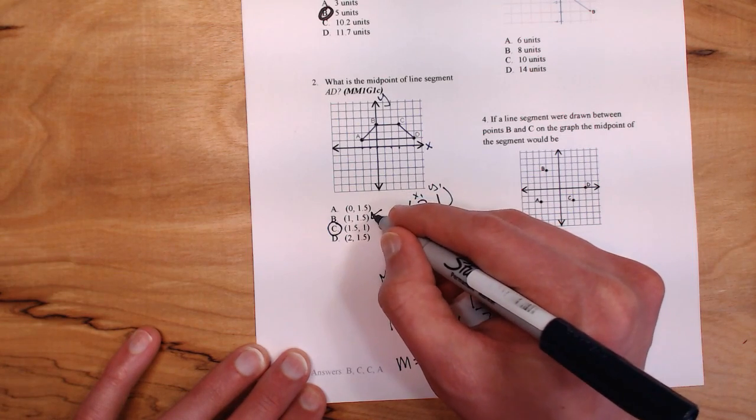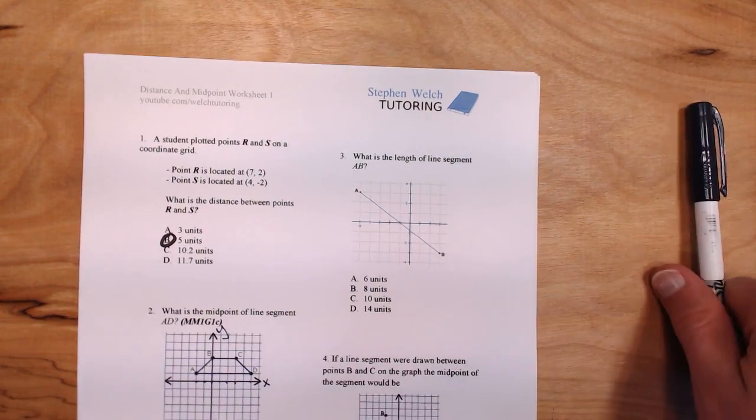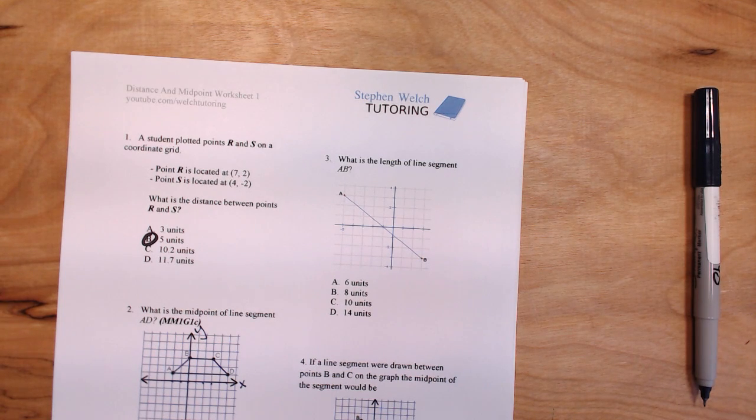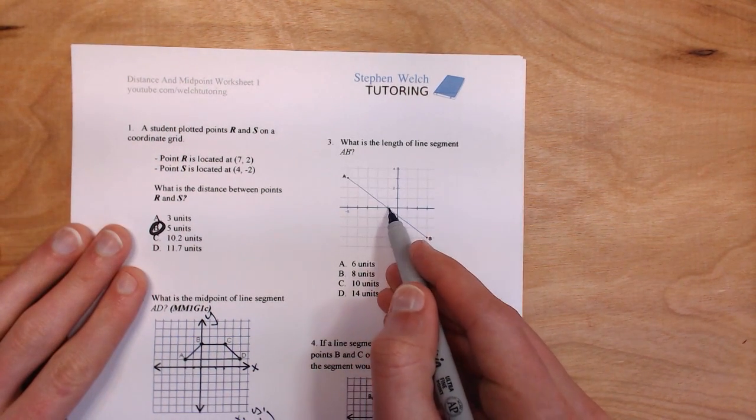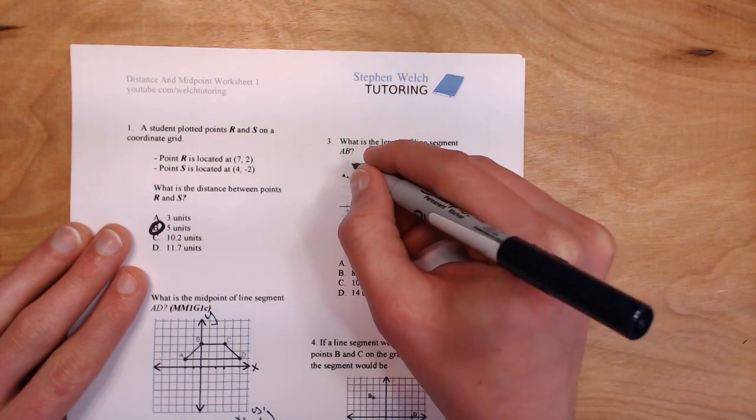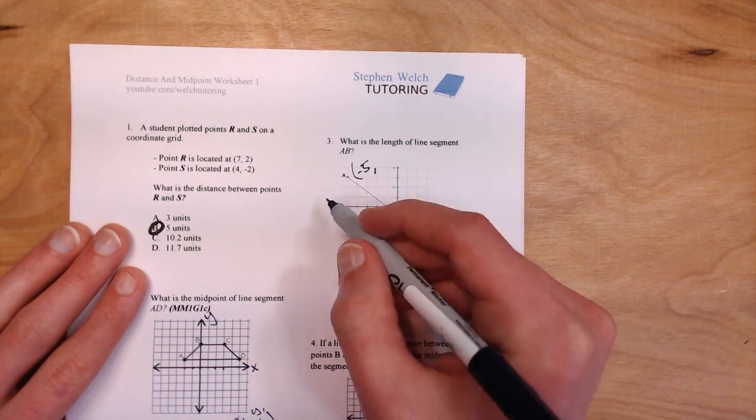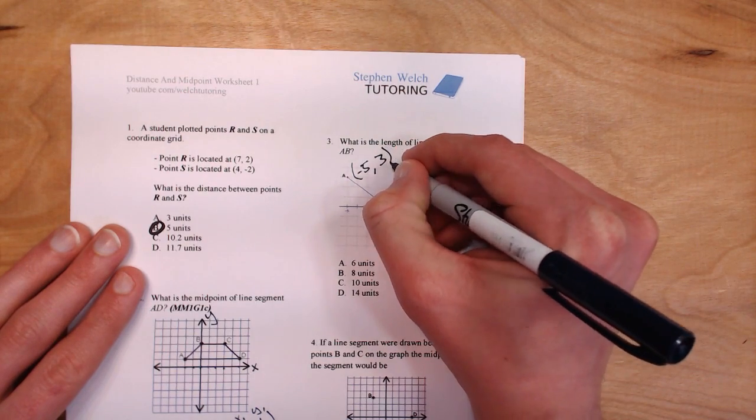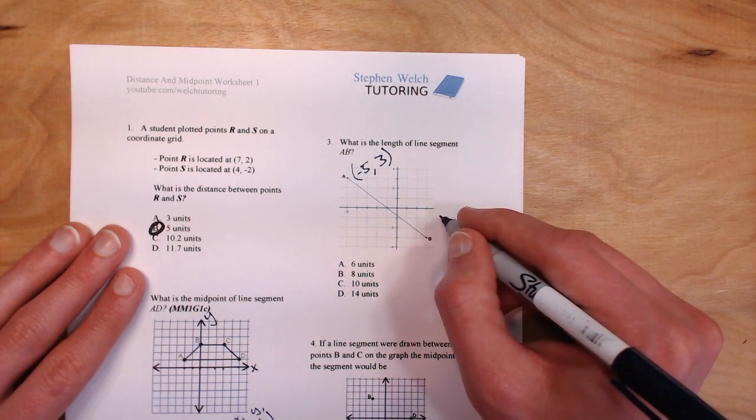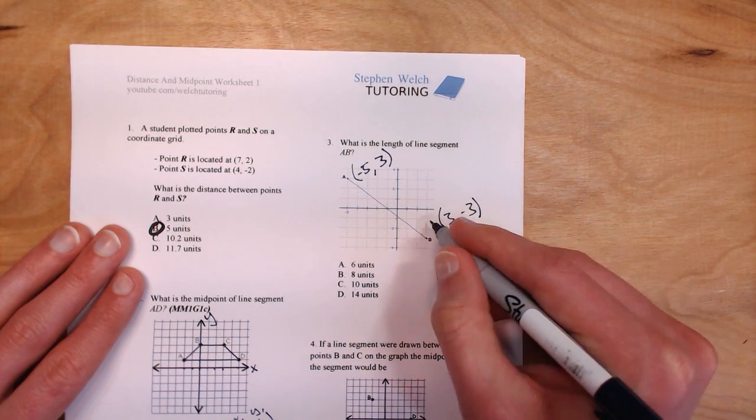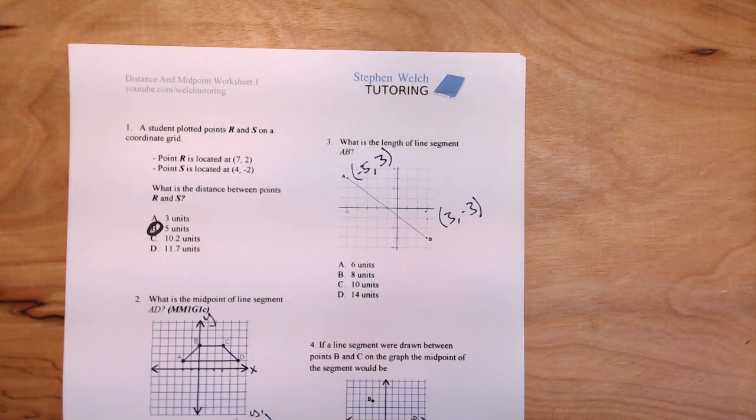Look at question number three. Question three says, what is the length of line segment AB? Kind of like last time, our job is to find the coordinates of point A and point B. To find A, I go one, two, three, four, five to the left. So it's negative 5 is my x value. And my y value, I go up three. So it's positive 3. Now to find my coordinates of point B, I go one, two, three over. So that's 3 is my x value. And negative 3 is my y value because I went one, two, three down.